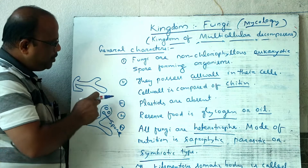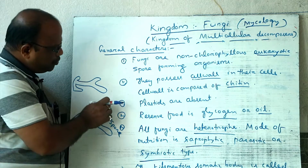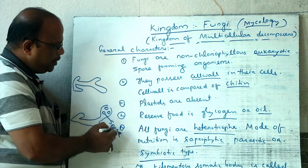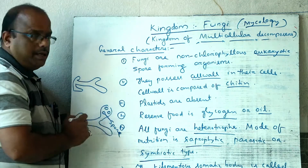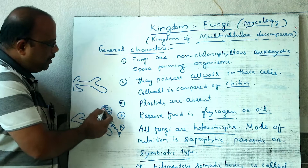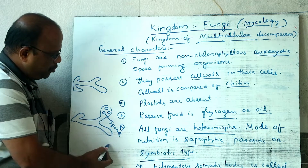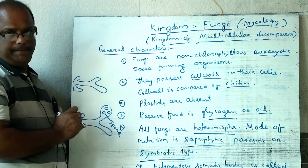At the tip of the sporangium, a pore develops, or the entire sporangium ruptures, liberating the spores. After release, each spore germinates to form a new fungus.